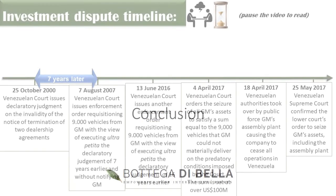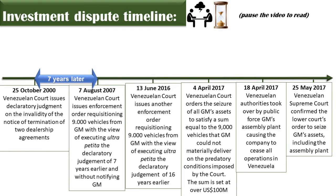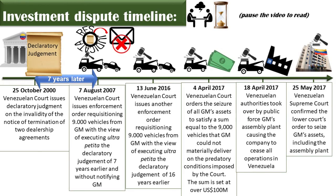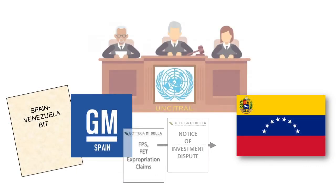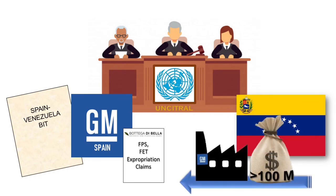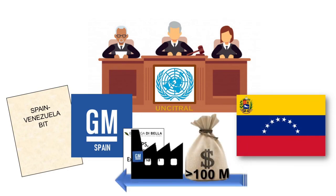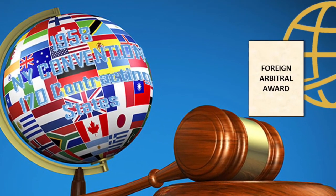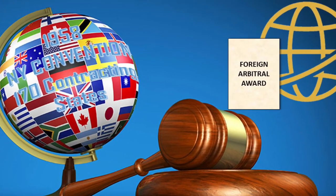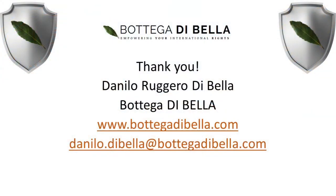In sum, the Venezuelan courts' actions and omissions, which are attributable to the Venezuelan state, are in contravention of the international rights that GM Spain enjoys under the Spain-Venezuela BIT. Accordingly, GM Spain may commence a UNCITRAL arbitration against Venezuela under the bilateral investment treaty to request the restitution of its plant and/or the payment of a compensation in excess of $100 million. The resulting arbitral award can be enforced worldwide on assets belonging to the Venezuelan government and its instrumentalities, thanks to the 1958 New York Convention.